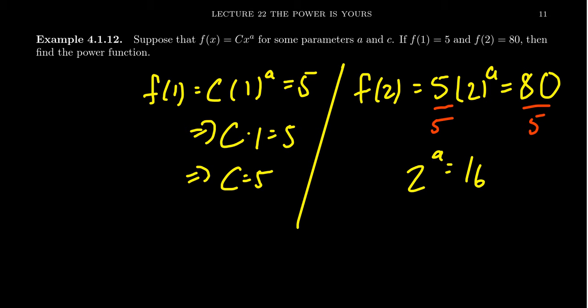Now normally this would be a situation where we might have to introduce something called a logarithm. But the numbers were chosen in such a way here that we actually don't need that. Because we're looking for a power of 2 that's equal to 16. We notice that 16 is the same thing as 2 to the 4th. And so the a value is going to equal 4.